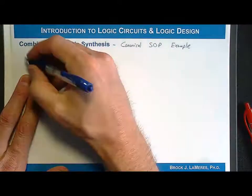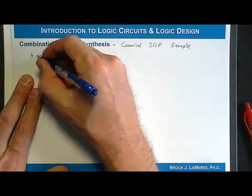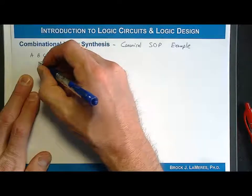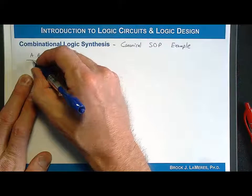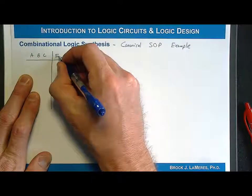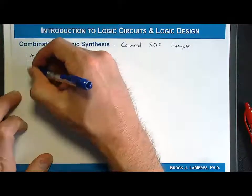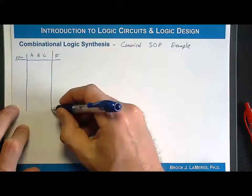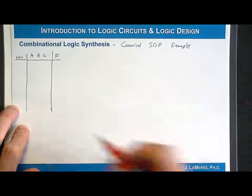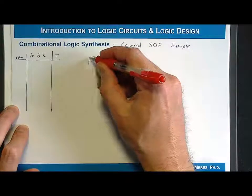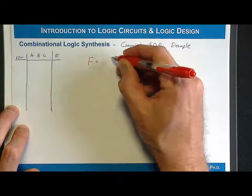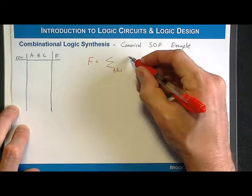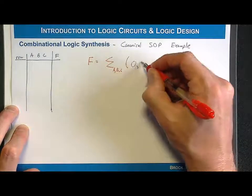Let's take an example where we have three inputs into our system: A, B, and C. I'm going to take the truth table and leave it blank for now. Let's say that I was given F equal to a minterm list of A, B, C — and it listed 0, 3, 7.